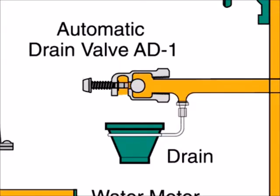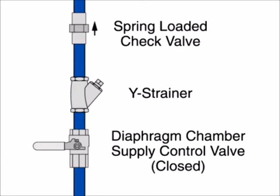Depress the plunger of the automatic drain valve to verify that it is open and the system is drained. Clean the Y strainer in the diaphragm chamber supply connection trim.